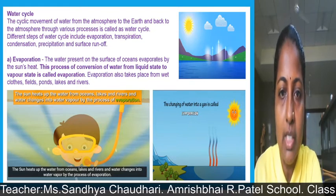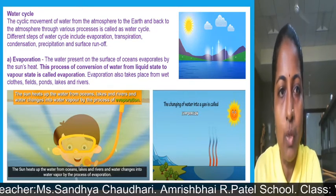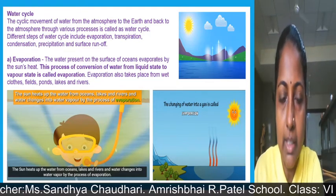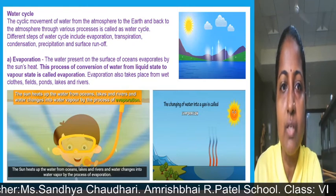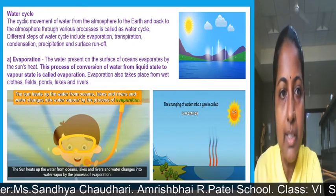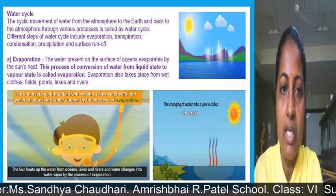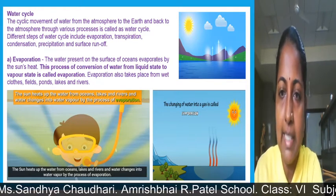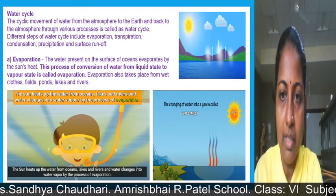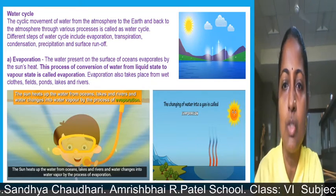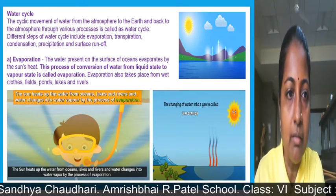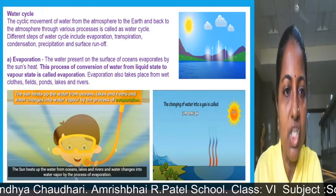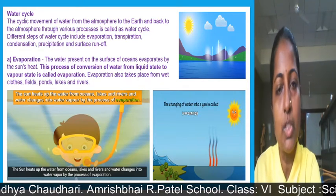The water present on the surface of oceans evaporates by the sun's heat, and this process of conversion of water from liquid state to vapor state is called evaporation. Evaporation also takes place from wet clothes, fields, ponds, lakes, and rivers. The sun heats up water from oceans, lakes, and rivers, and water changes into water vapor by the process of evaporation.